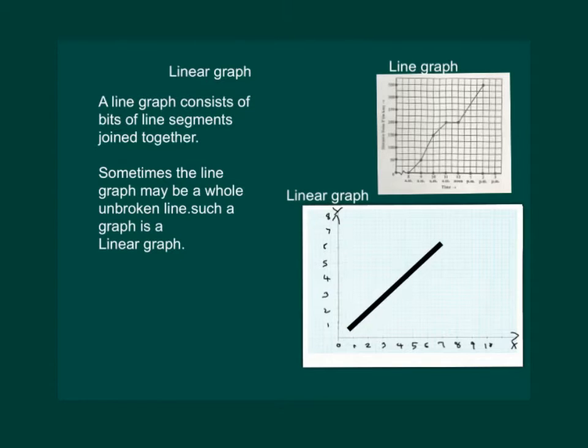We know that a line graph consists of bits of line segments joined together. Let us see, in this graph we are joining bits of lines to make a graph and that is why it is called a line graph.